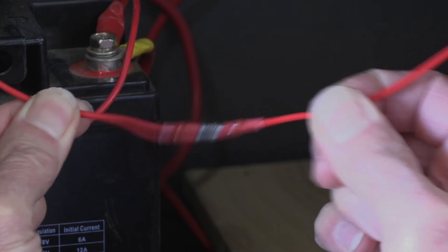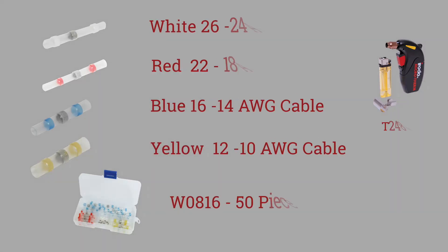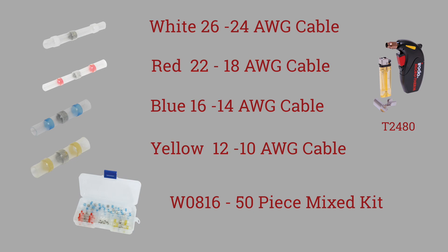The solder sleeves are available in sizes to suit cable from 26 gauge to 10 gauge, in packets of 6 or 50, or in a 50-piece mixed kit with its own storage container.